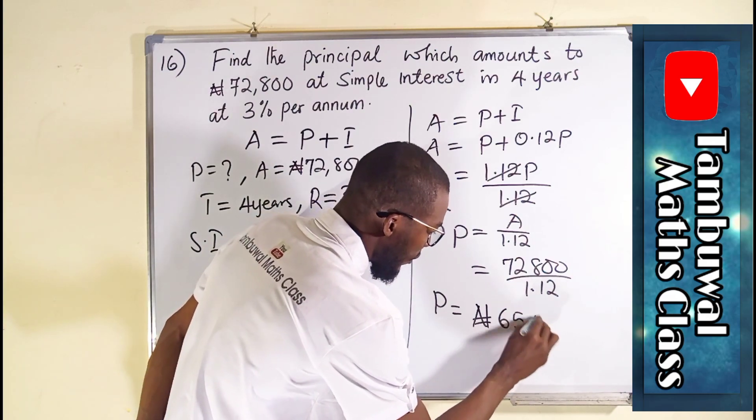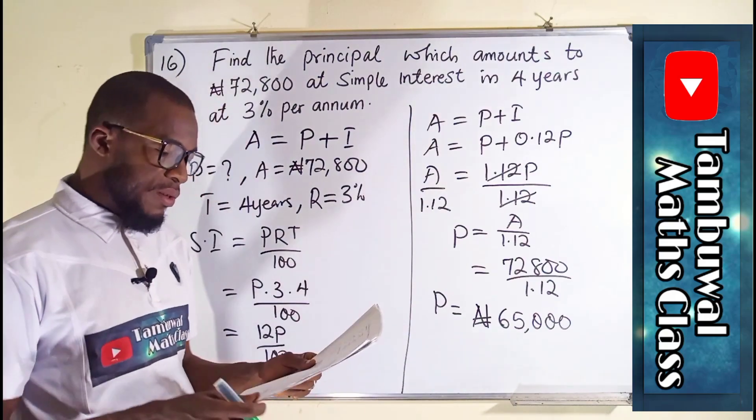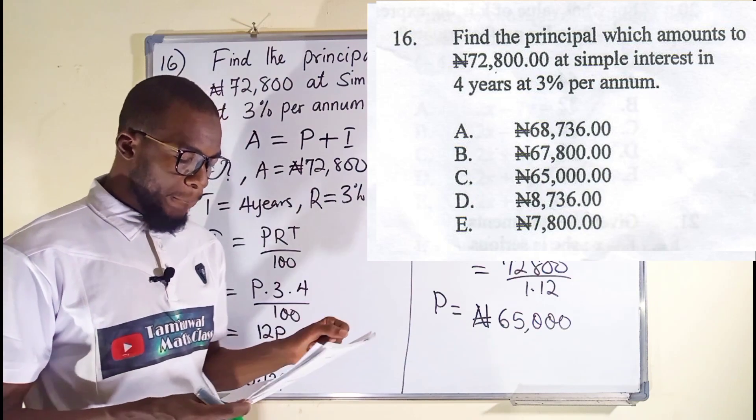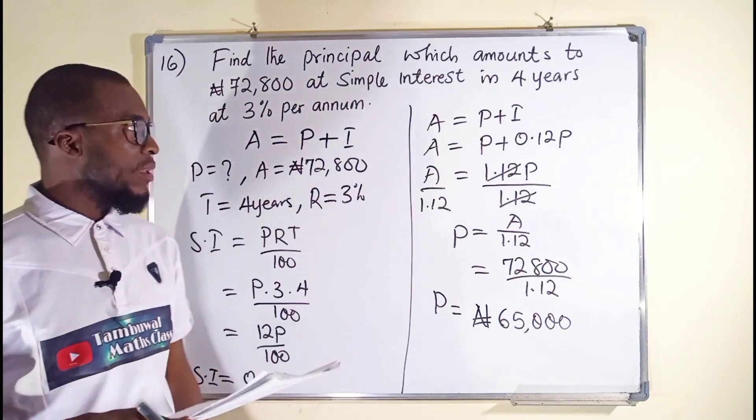65,000 Naira is our principal amount, which is the option C from here. So now let us look on to question number 17.